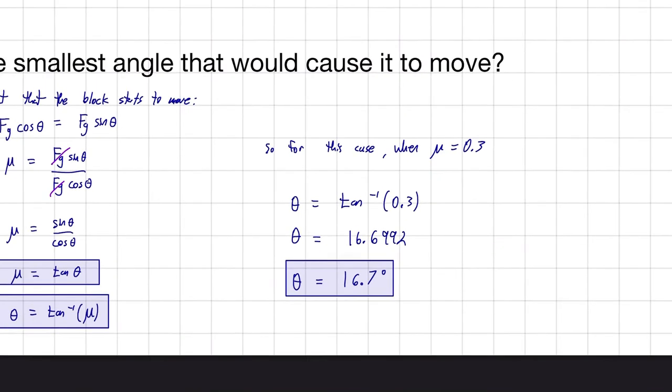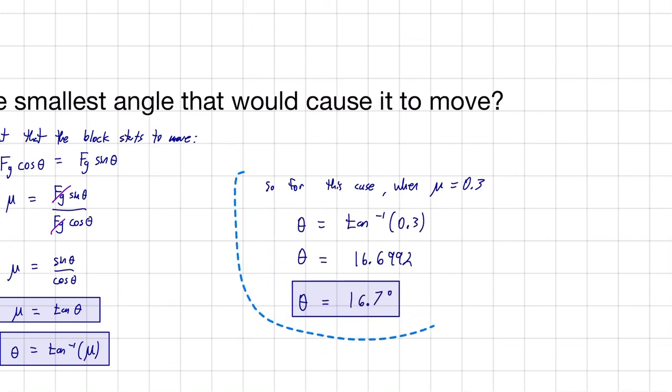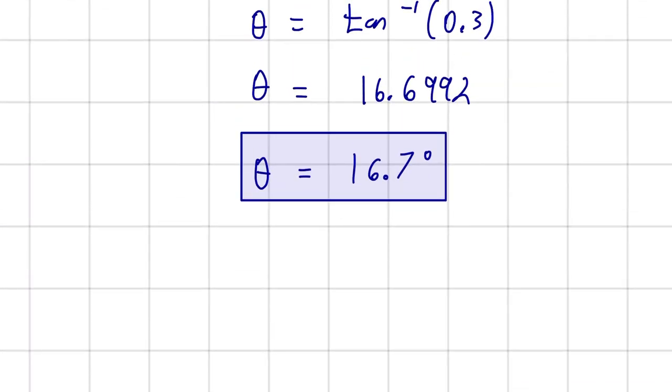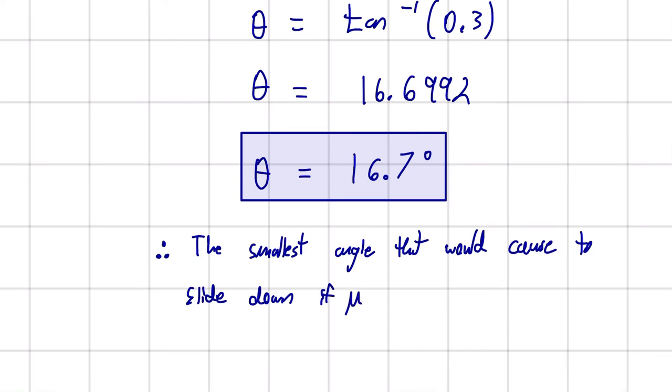So therefore, I'm going to write a concluding statement. Therefore the smallest angle that would cause the block to slide down, if mu is equal to 0.3, is 16.7 degrees.